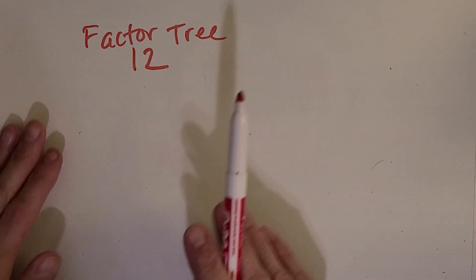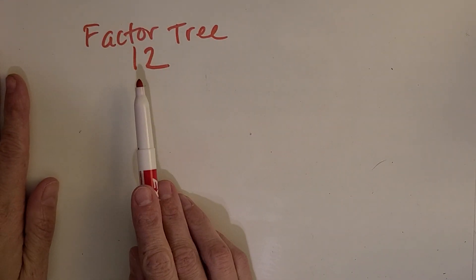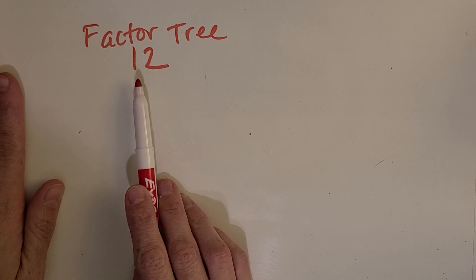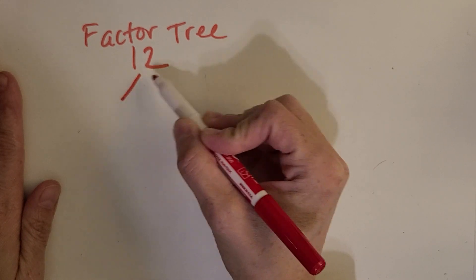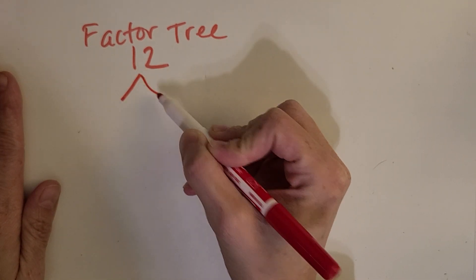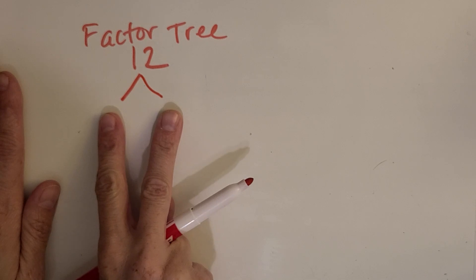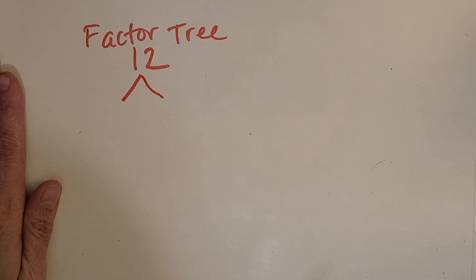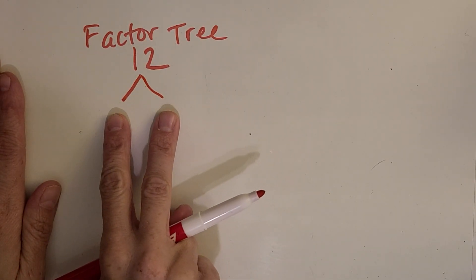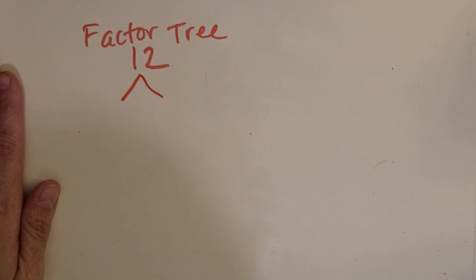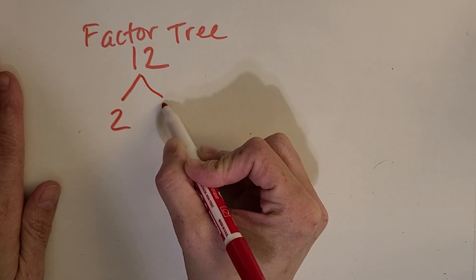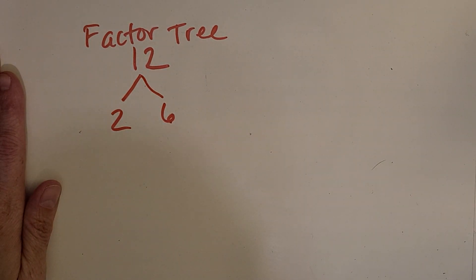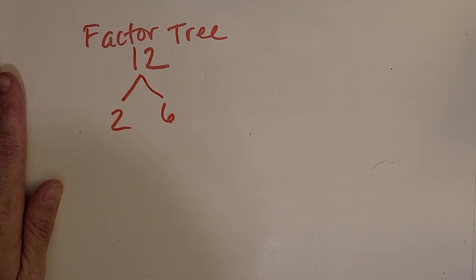Let's make a factor tree with the number 12 — an easy place to start. The way you start is 12 goes at the top of the tree and you make branches. Down here, we're going to put two factors that equal 12. You might have said two times six, or you might have said three times four. Either way can work, and I'll show you that.